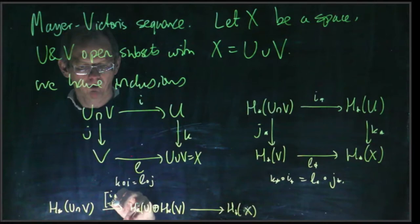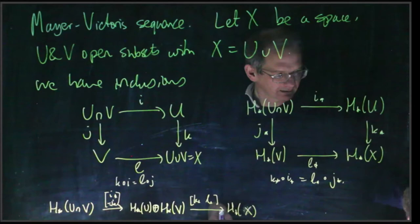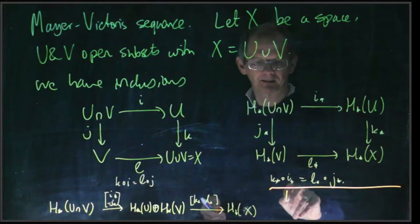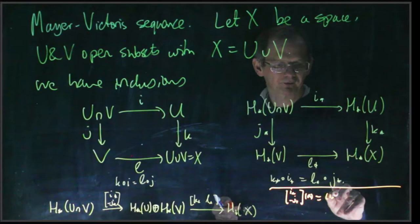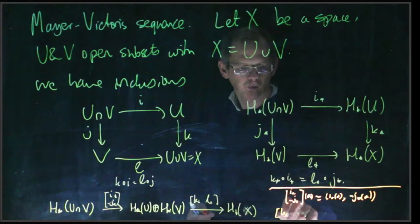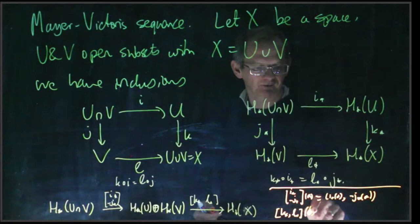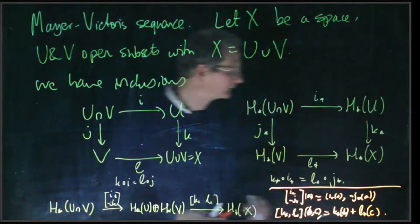This map is going to be i star and minus j star. By the map i star minus j star, I mean the map which sends an element a to i star a comma minus j star a. And by the map k lower star l lower star, I mean the map that sends a pair b comma c to k star b plus l lower star c.